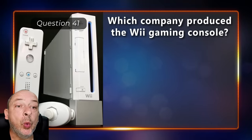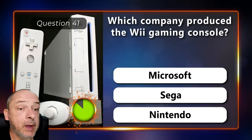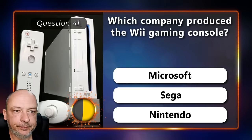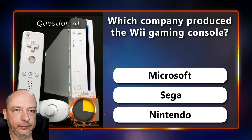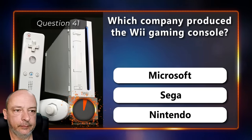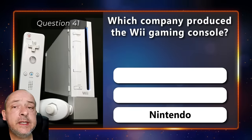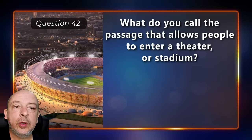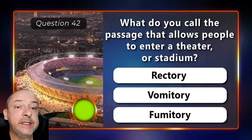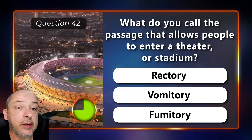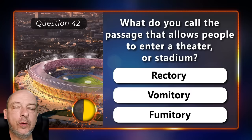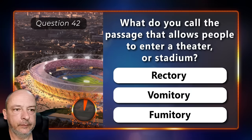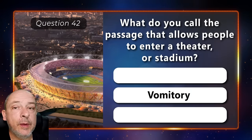Which company produced the Wii gaming console — Microsoft, Sega, or Nintendo? The answer is Nintendo. What do you call the passage that allows people to enter a theatre or stadium — a rectory, vomitory, or fumatory? It's called a vomitory.